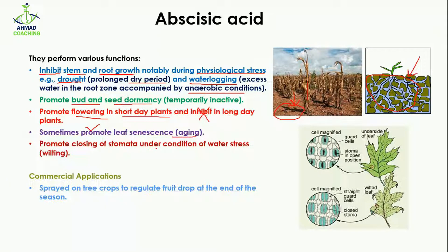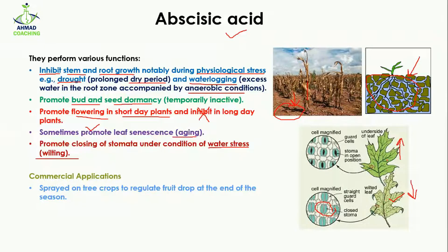Abscisic acid promotes the closing of stomata under water stress conditions. When there is a wilting condition — meaning the water level is very low and the leaf is wilted — the stomata are closed by abscisic acid. When the water level increases to a suitable level for the plant, the stomata open again.